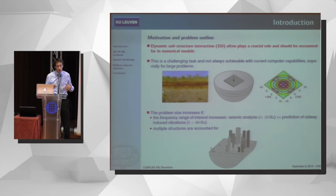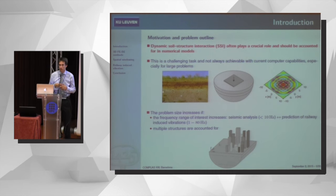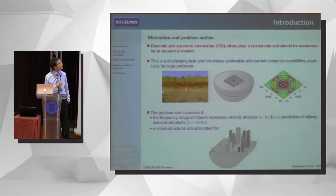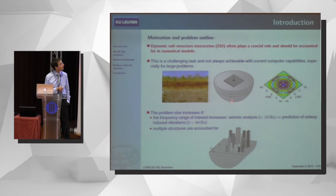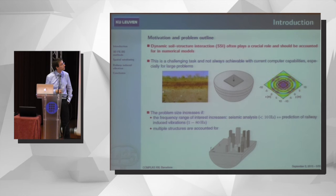Usually you have a very large variation of dynamic properties of the soil with space, but the most important one is often the variation of stiffness with depth. Usually you have soft layers at the top with an increase of stiffness as you go deeper. So we typically represent the soil as a horizontally layered half-space.